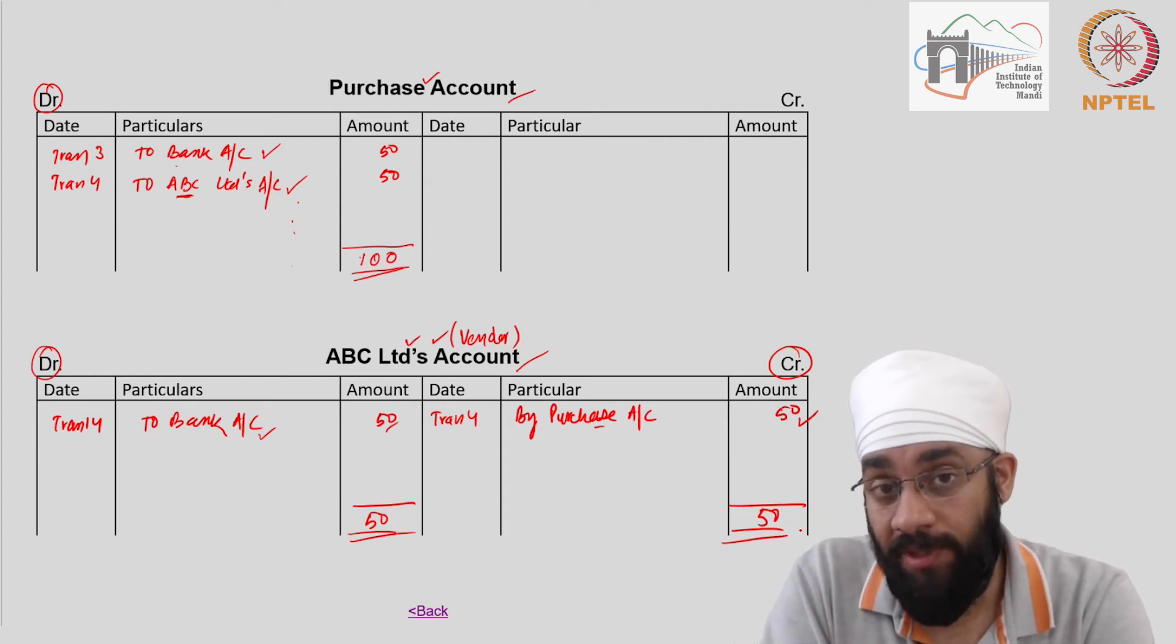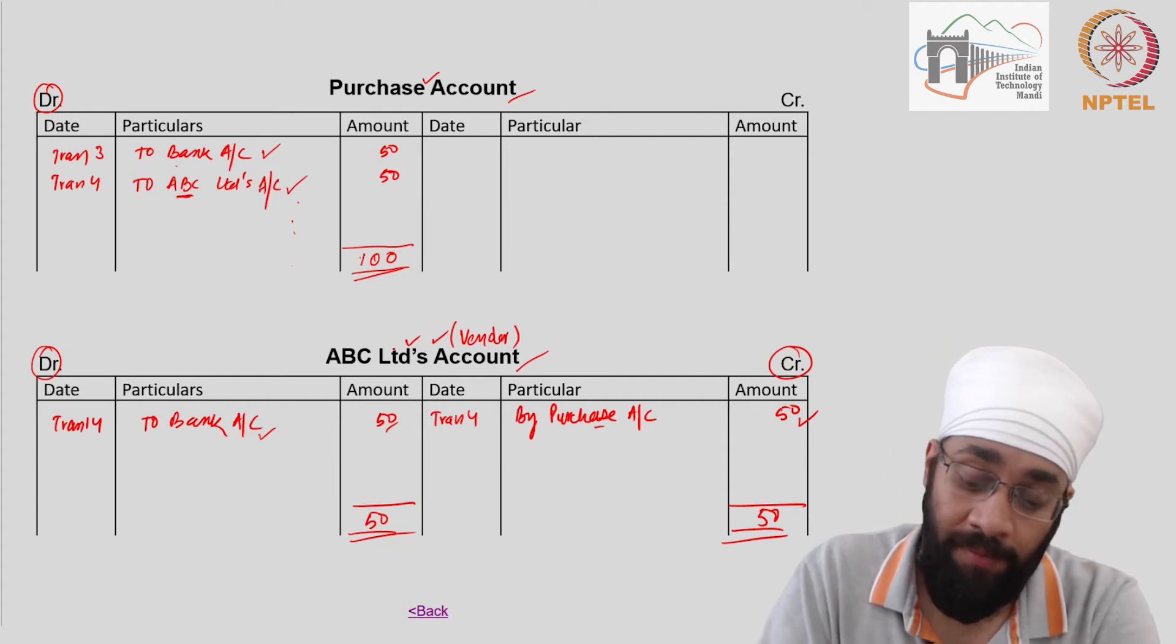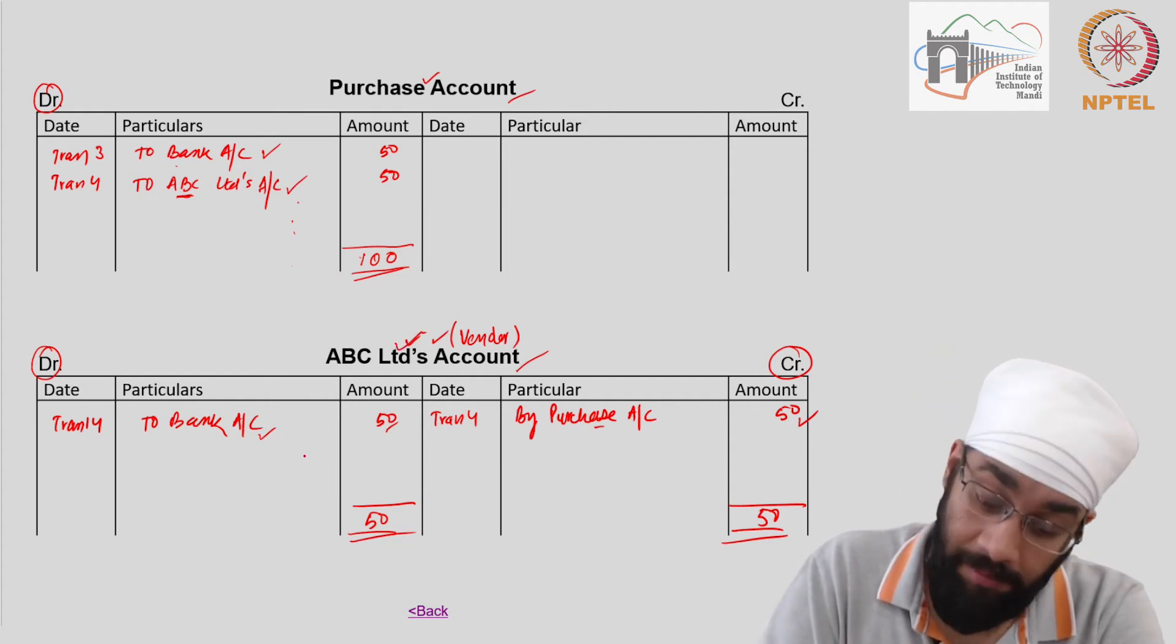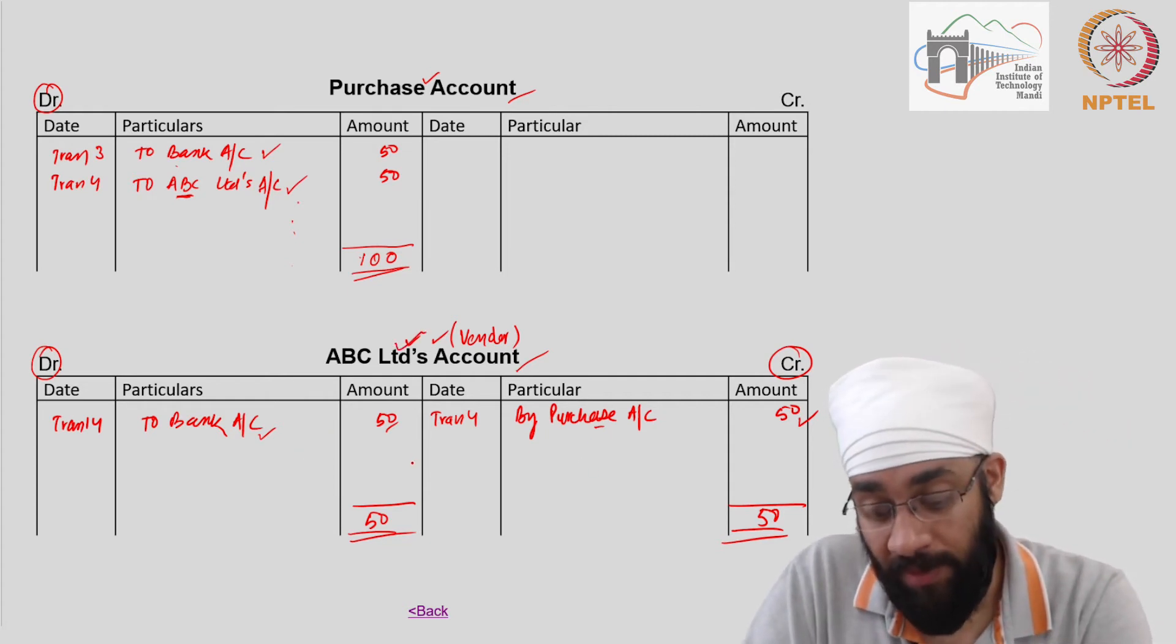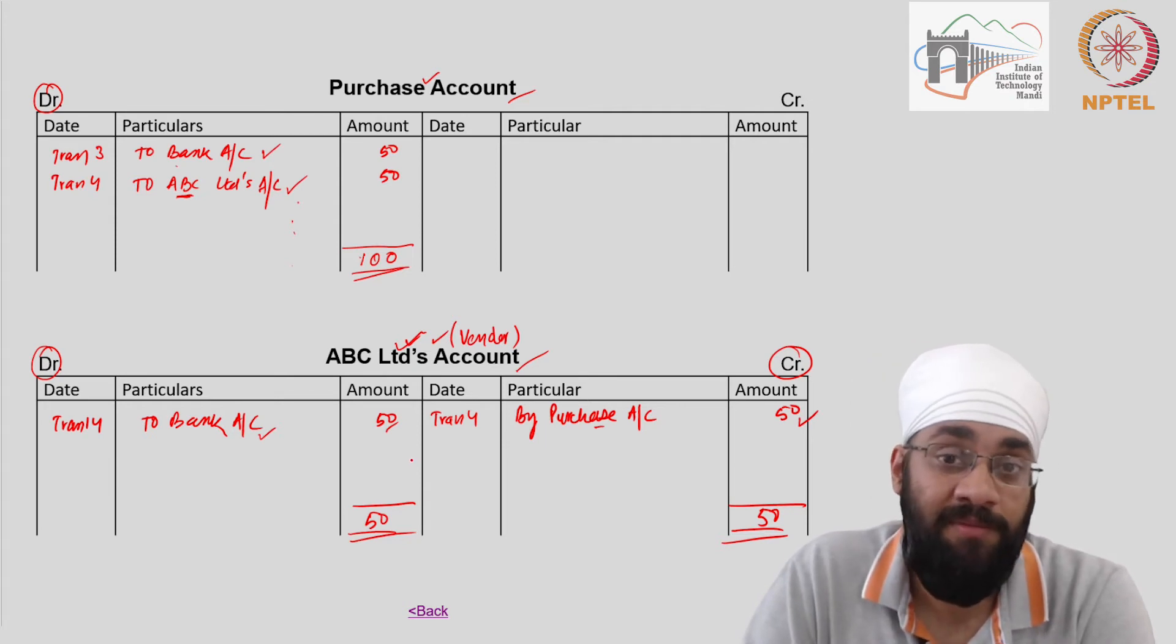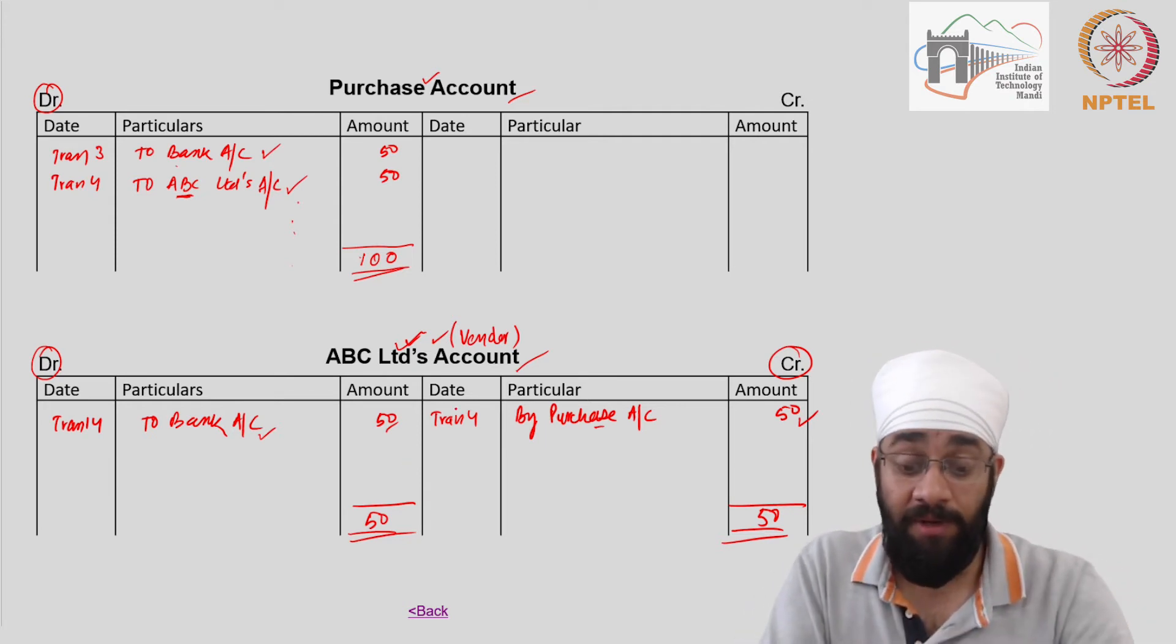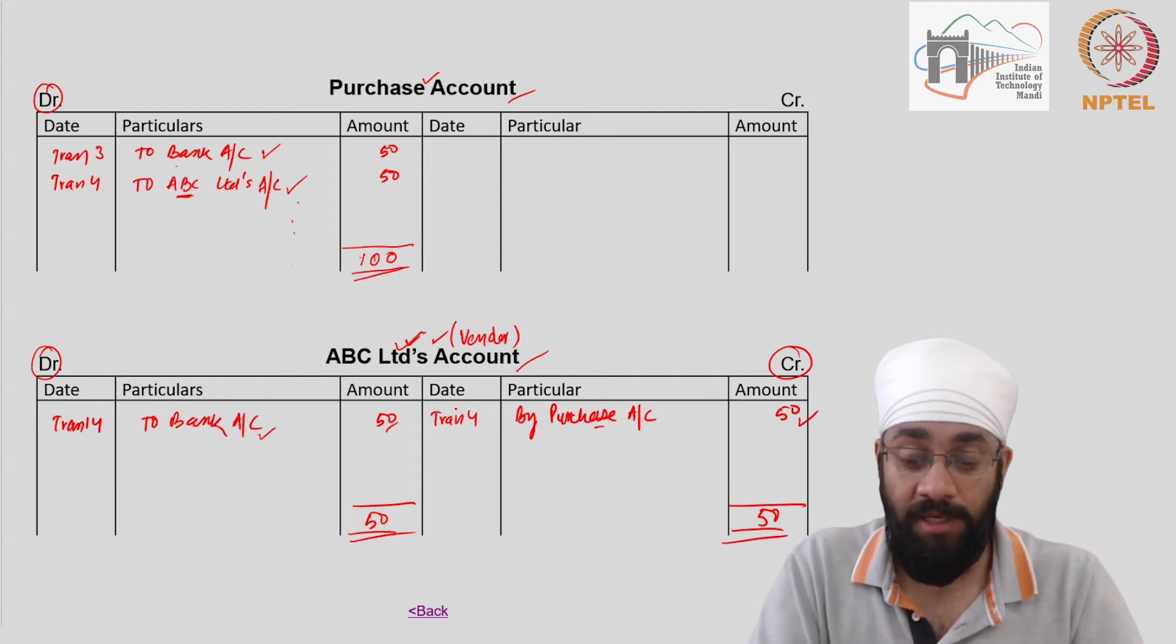It is possible that you could make multiple purchases from ABC, pay him some amount, not pay him some amount, he could also allow you some discount as well - all of that is going to be clubbed here in one place in this account.